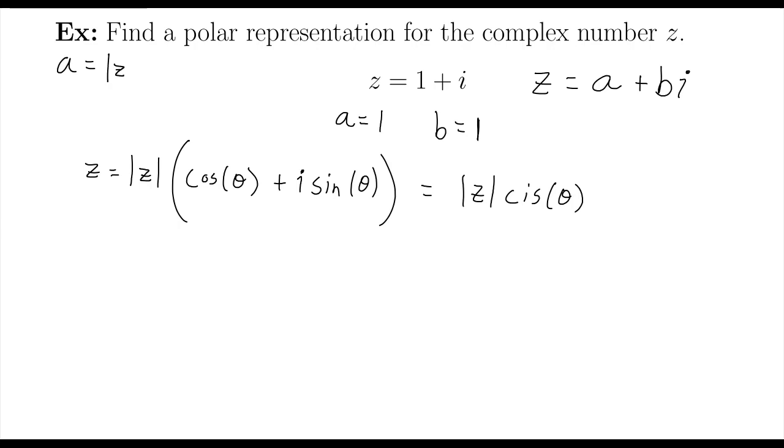Remember, we're treating the magnitude or the absolute value of the complex number as the radius, cosine of theta, and b is equal to the magnitude times sine of theta. Again, this is like saying x equals r cosine theta, and y equals r sine theta. Same exact thing.